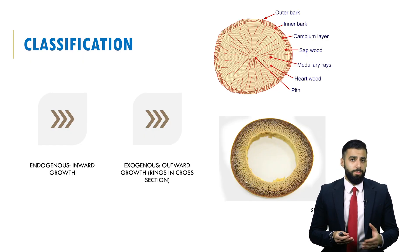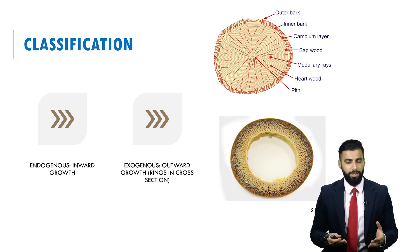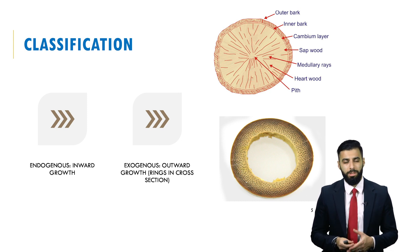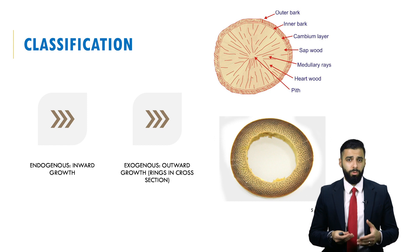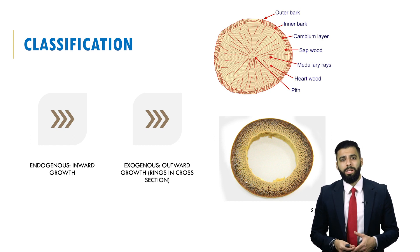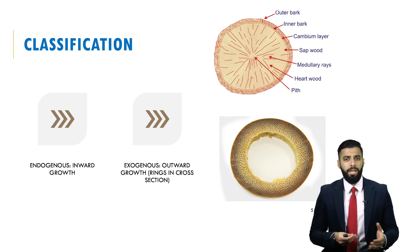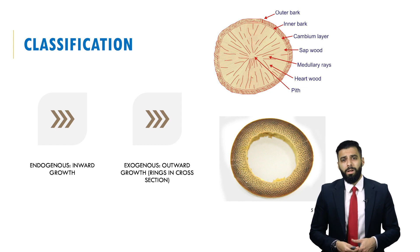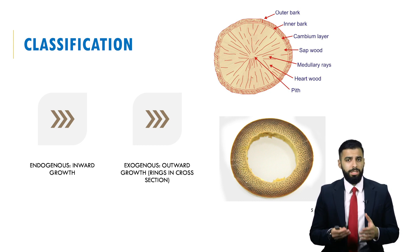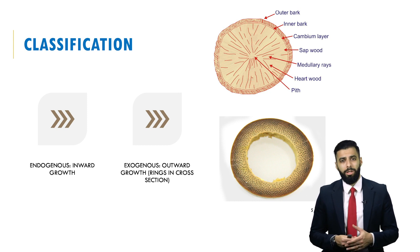You can classify timber based on the tree type from which it is obtained. We have two classifications depending on the tree type: endogenous trees and exogenous trees. An endogenous tree is one that grows inwards in a longitudinal fibrous mass — an example would be bamboo, palm, and cane. An exogenous tree, on the other hand, grows outwards and the growth can be seen as rings in a cross-section, as you can visualise in the figures on the slide.